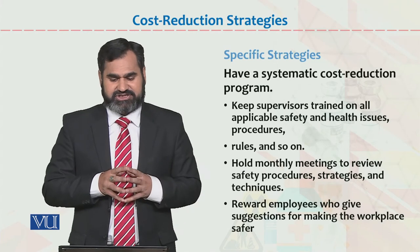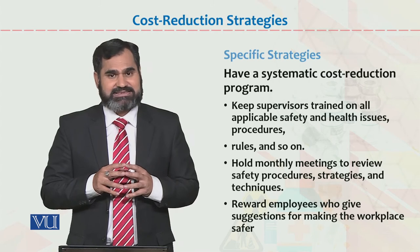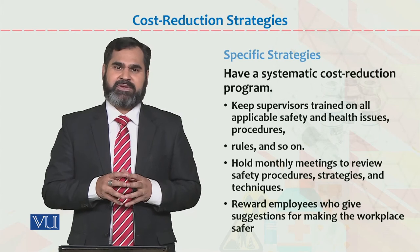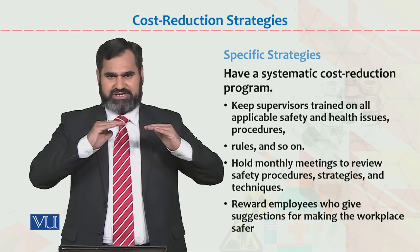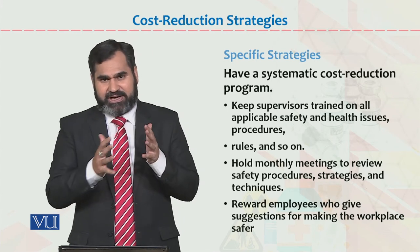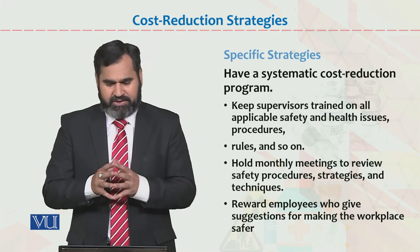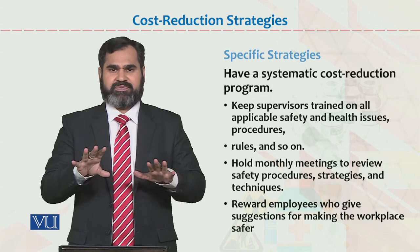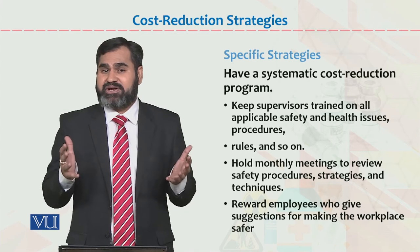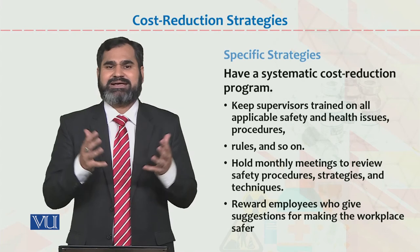Keep supervisors trained on all applicable safety and health issues and procedures. When your heads, seniors, and top management are well-trained, that training will automatically transfer down to the bottom line and all your activities will start to perform better. Rules must be written, specific, well-shared, and well-communicated — there should be no modification to them, and all employees should know the organization's rules and regulations.